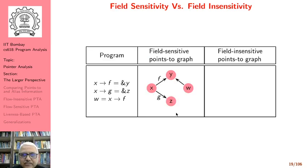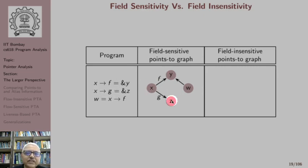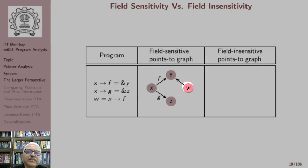Now for field sensitivity versus field insensitivity. Consider an assignment where we have a pointer to a structure and we change its field F so that X's field F points to some object Y. Then we assign to the G field of X and store Z. Note that F and G are different fields. Later, when we say W = X->F, W should point to Y, meaning we make a distinction between fields F and G. A field-insensitive analysis will not make that distinction.